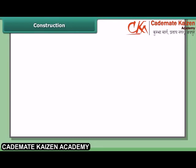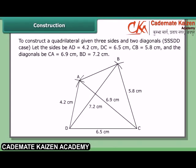To construct a quadrilateral given three sides and two diagonals — the SSSDD case. Let the sides be AD = 4.2 cm, DC = 6.5 cm, CB = 5.8 cm, and the diagonals AC = 6.9 cm and BD = 7.2 cm. The two triangles we can construct to complete the quadrilateral are BCD and ACD.